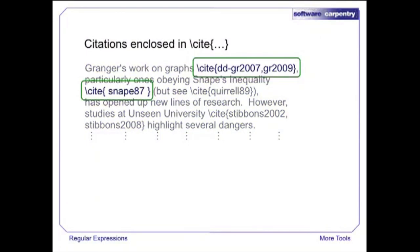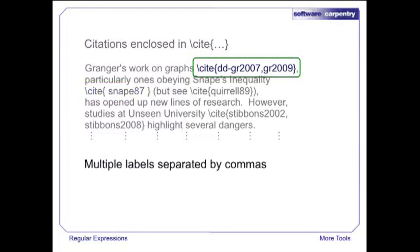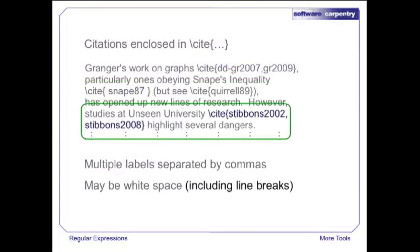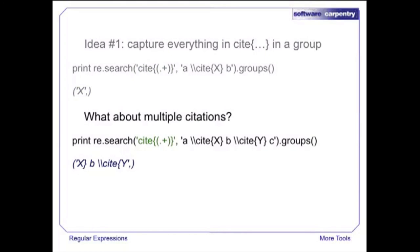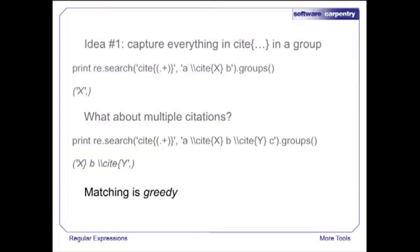Our starting point is an archive of several thousand papers and theses written in LaTeX. They all use the same labels to refer to items in a shared bibliography. Our job is to find out how often citations appear together. In LaTeX, citations are written using backslash-cite with cross-reference labels in curly braces. A single citation can include two or more labels separated by commas, there may be white space before or after labels, and there can be multiple citations per line. Our first idea is to use a group to capture everything inside the curly braces following the word 'cite'.